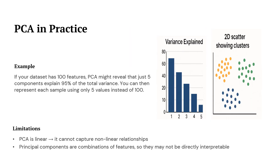Let us see how PCA works in real life. Imagine your dataset has 100 features. After applying PCA, we can represent each data point using just 5 numbers instead of 100 without losing much important information. If we reduce to just two principal components, we can see clear clusters or patterns in a simple 2D scatter plot.